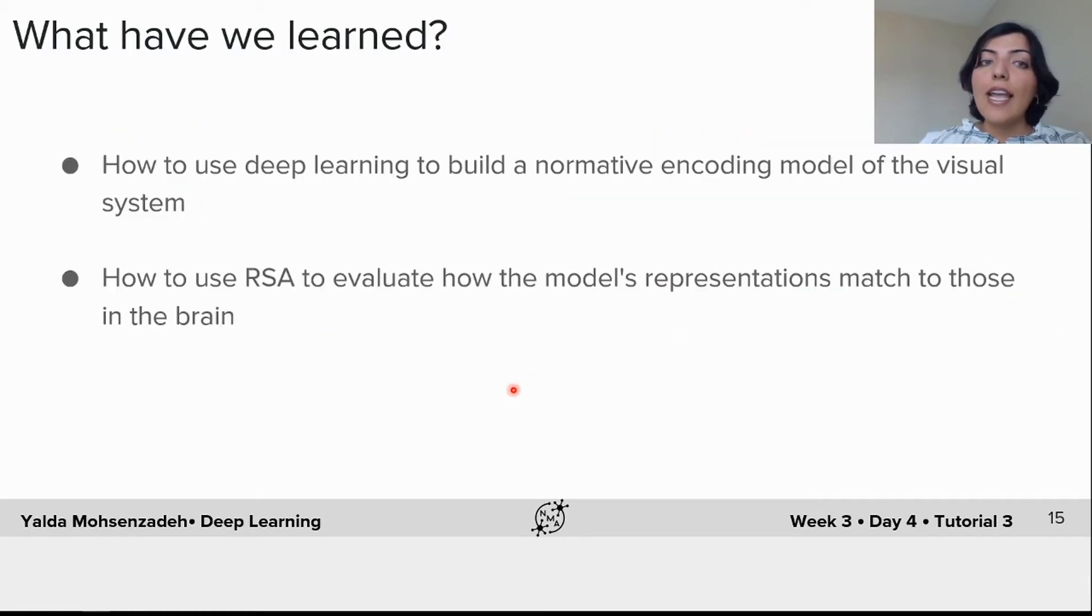What you learned today is how to use deep learning to build a normative encoding model of the visual system, and how to use the RSA framework to evaluate how the model's representations match to those in the brain.